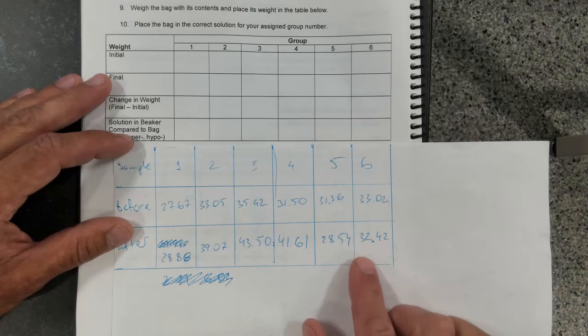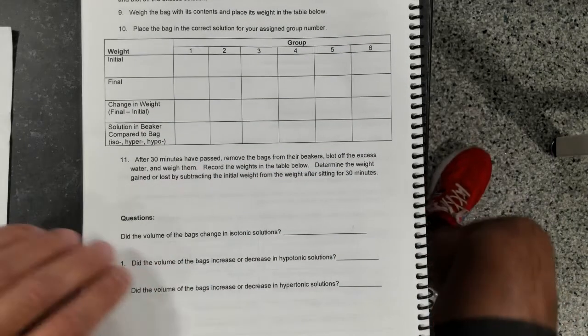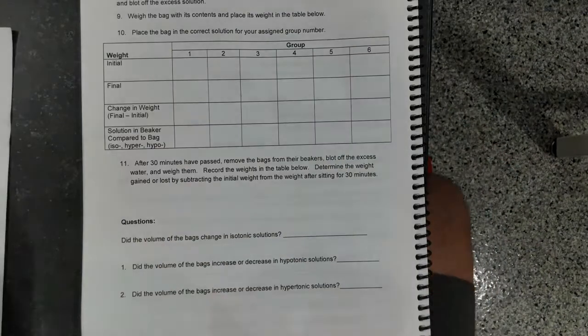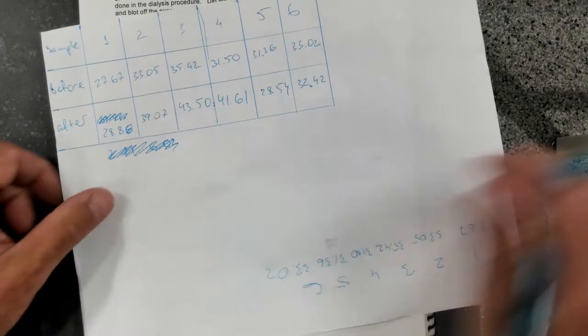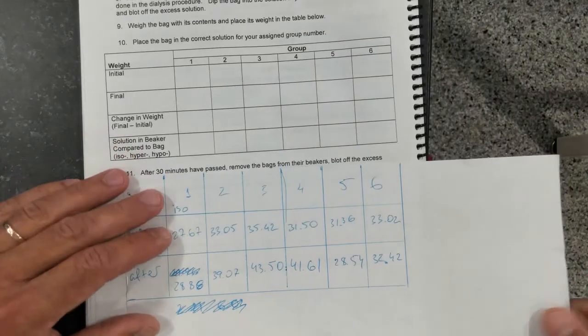Point 54, 32.42. Now in terms of isotonic versus hypertonic versus hypotonic, obviously the first one was isotonic. Okay, this was isotonic, then we...